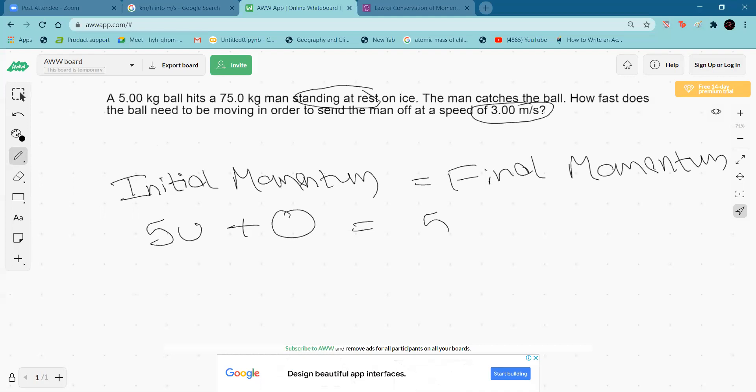So 5 times 3 plus 75 times 3 equals 5u. Therefore, 5u equals 80 times 3, which is 240.